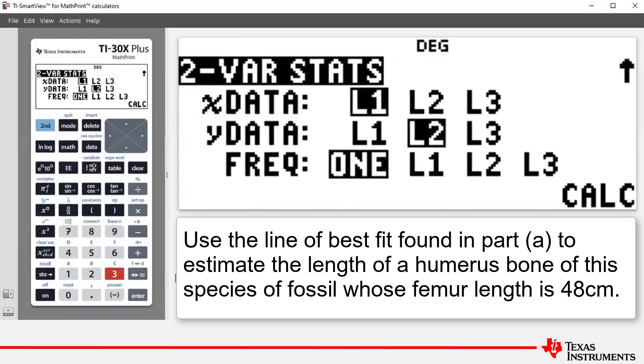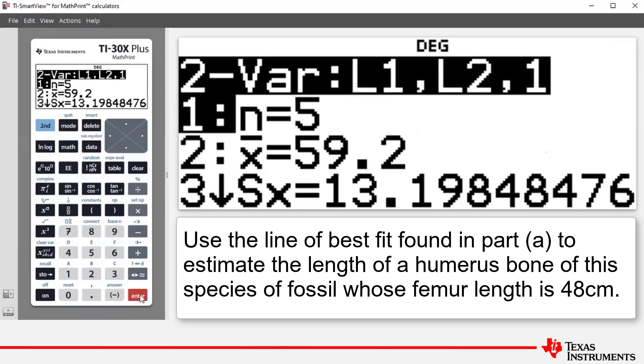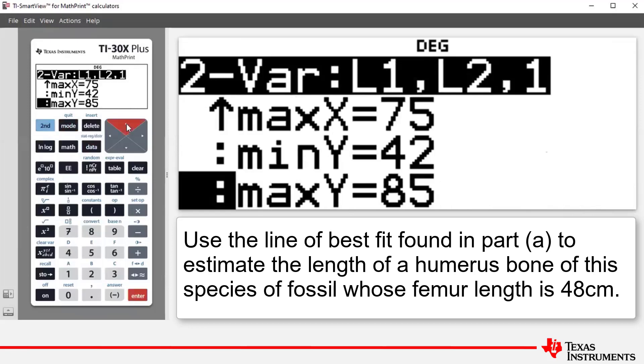And we can see there our X data and our Y data and our frequency, they're all set up nicely. So we press enter with the cursor flashing over calc, which is short for calculate. We press enter and we get into our two variable statistics. Now if we scroll up rather than down,